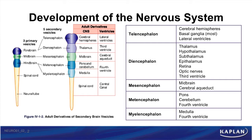As mentioned before, the brain and brainstem develop from the neural tube, which initially differentiates into three primary vesicles: the prosencephalon, or forebrain; the mesencephalon, or midbrain; and the rhombencephalon, or hindbrain.